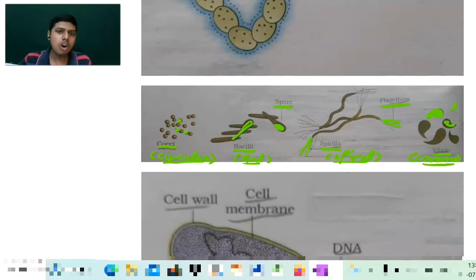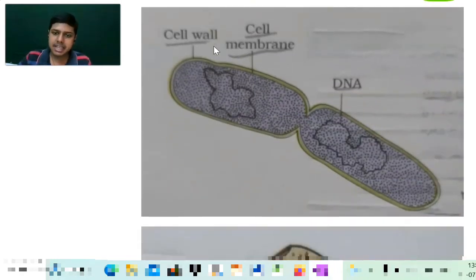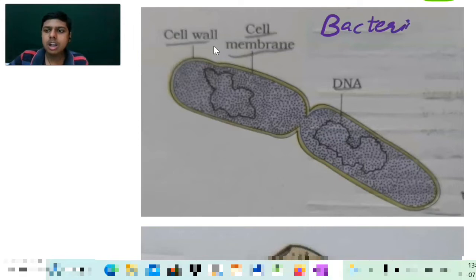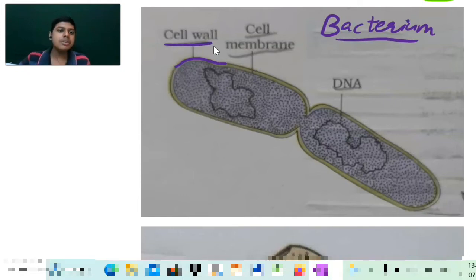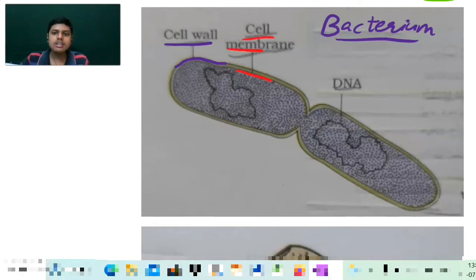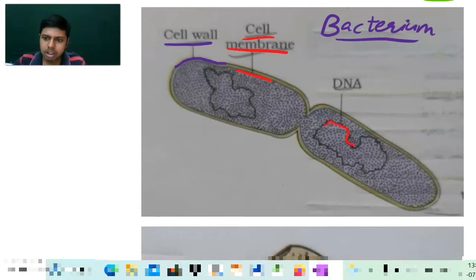These were the different structures of bacteria. Now I'll be telling you about the division — this is a simple bacterium. This is the cell wall, the outer outside layer. Now I am marking in red the inner wall — this is the cell membrane. And this irregular shaped structure you can see here — this whole region — is your DNA.